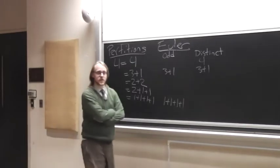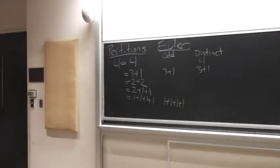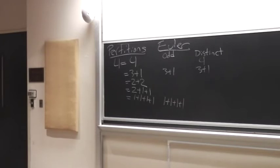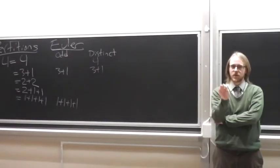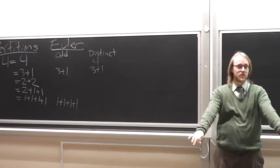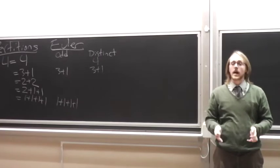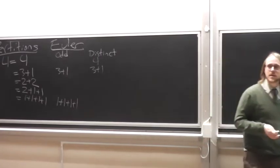But this is a talk about bijections, so we want to prove Euler's theorem bijectively. The bijective proof most people think of is Glacer's bijection, where you basically chop parts in half or glue duplicates together. That's not the one I'm talking about today. There's a different bijection due to Sylvester that has some very desirable properties, and I'm going to use Sylvester's bijection to prove new partition identities. It turns out Sylvester's bijection has a very important property that will be a key ingredient in the proof.